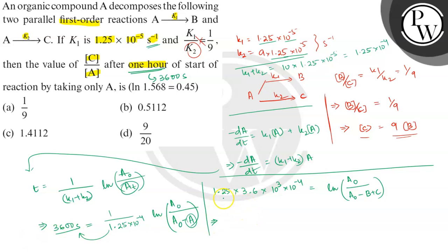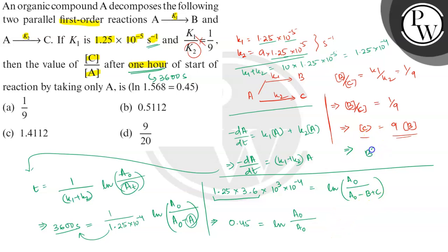Computing the left side: 1.25 × 3.6 = 4.5, so 4.5×10⁻¹ = 0.45. Therefore 0.45 = ln(a0 / (a0 − b − c)). Since c = 9b, we get b = c/9. Substituting: 0.45 = ln(a0 / (a0 − c/9 − c)).